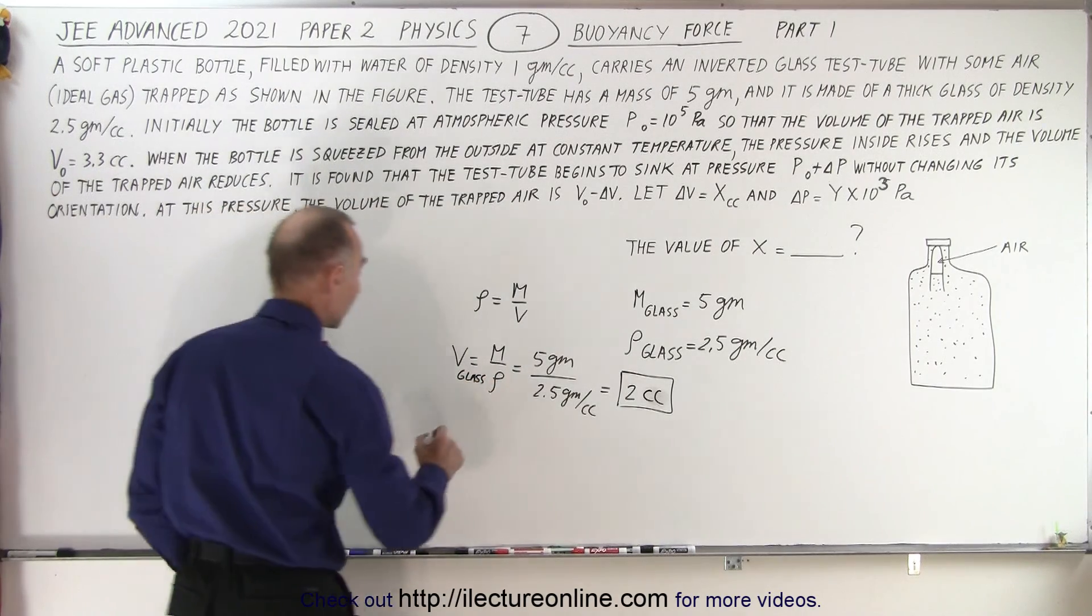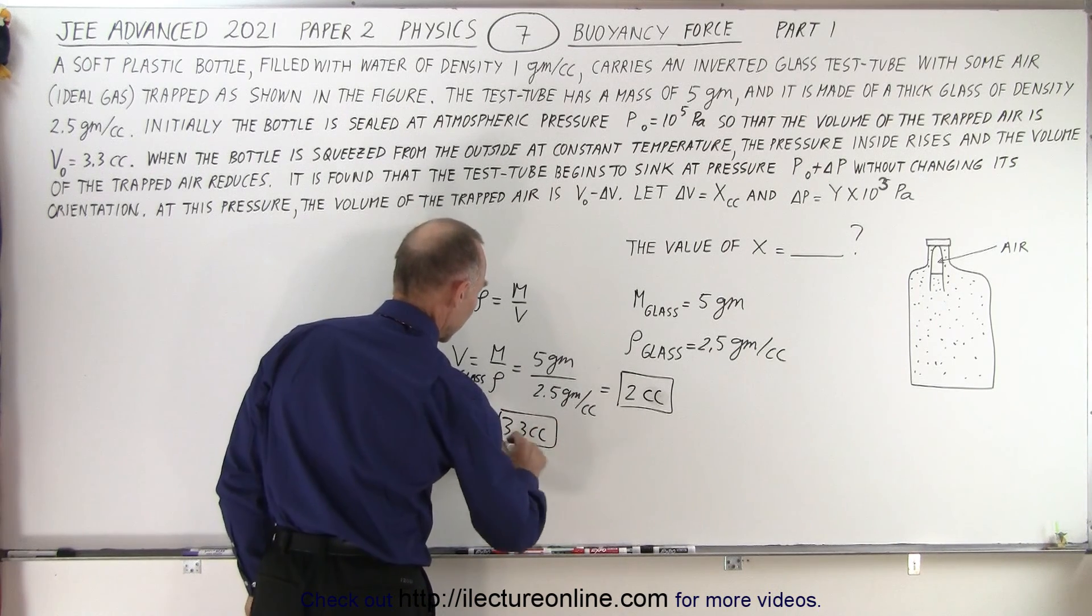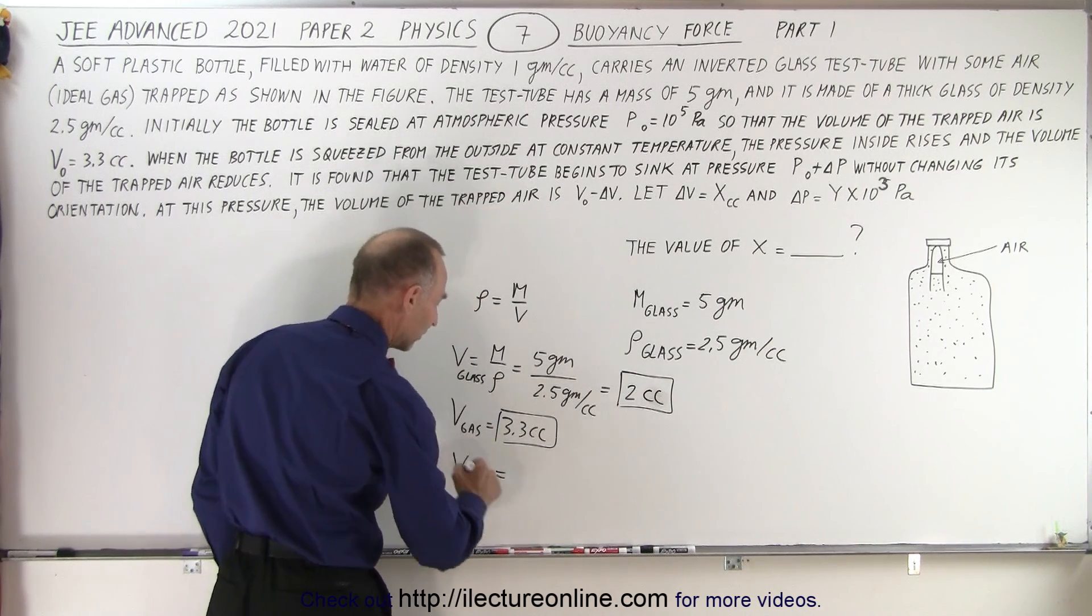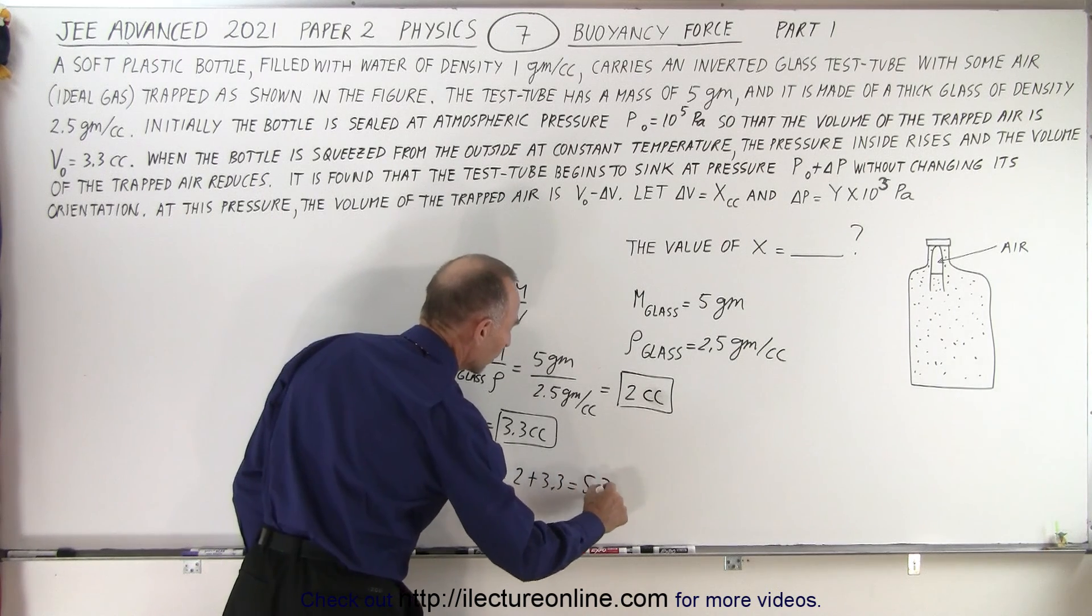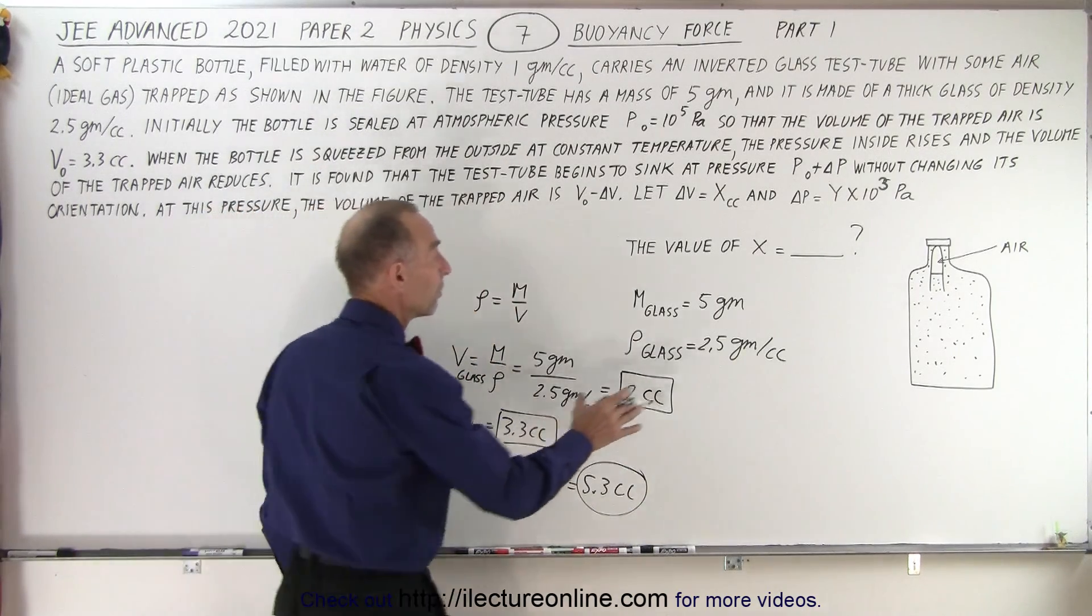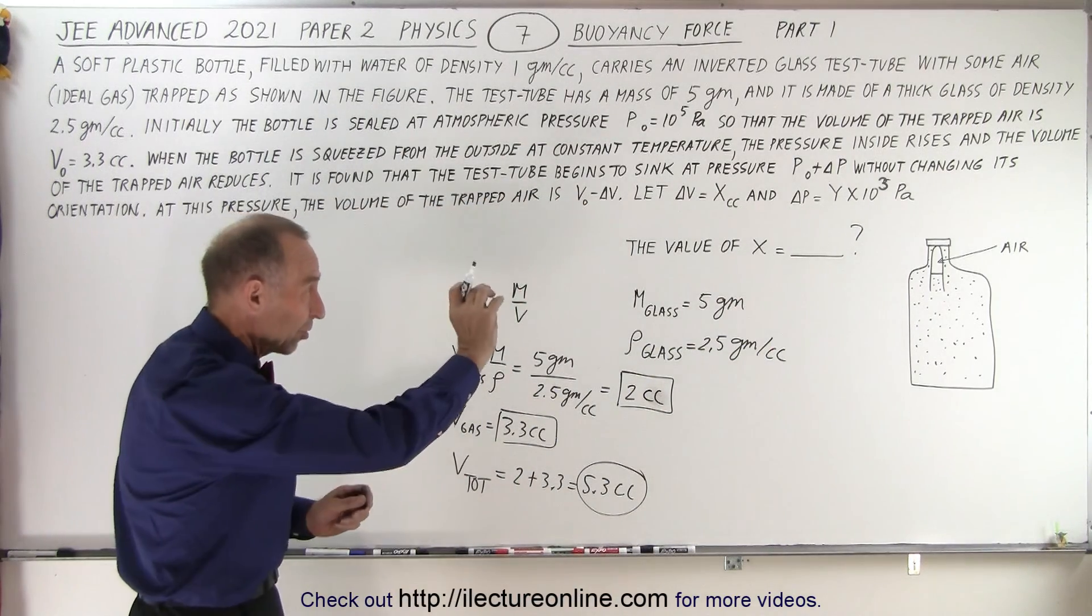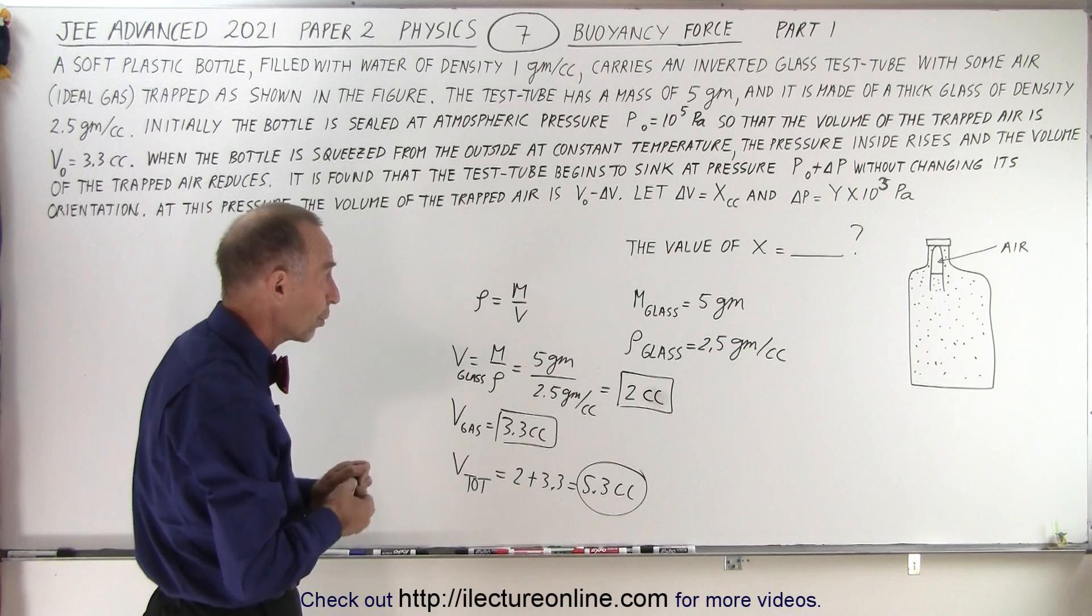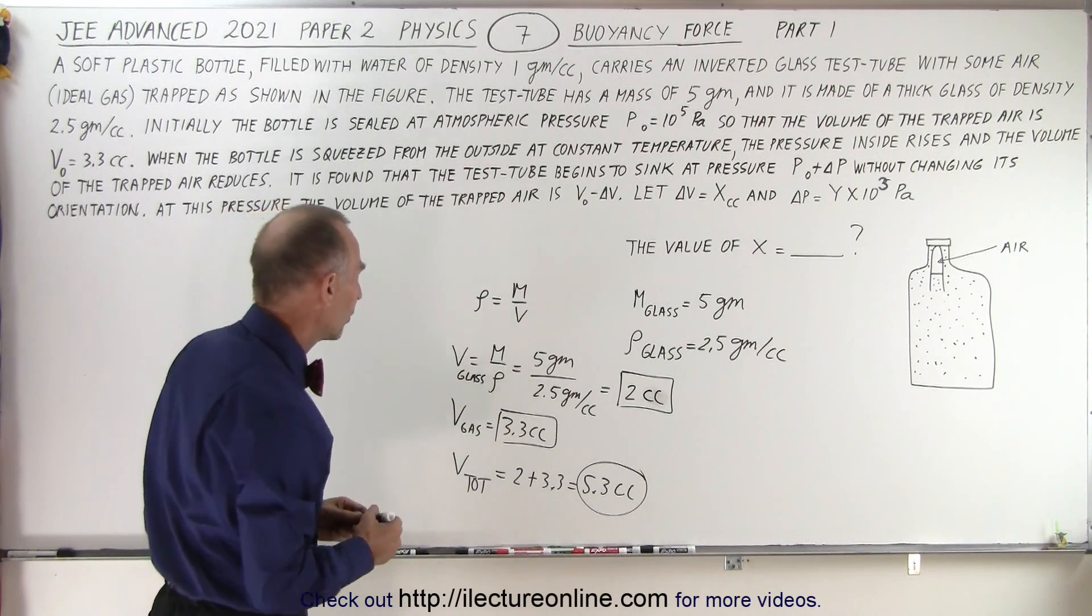Now they also tell us that the volume of the trapped gas is equal to 3.3 cc's, and notice the volume total of the glass and the gas is going to be 2 plus 3.3 or 5.3 cc's. That's the total volume. And notice that the total mass will be the mass of the glass plus the mass of the gas, but the mass of the gas is so small because it's just a little bit, only 3.3 cc's. You know that one mole of gas occupies 22.4 liters at STP, we can ignore the mass of the gas.